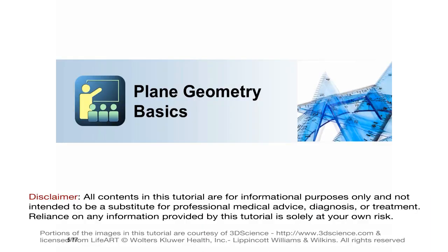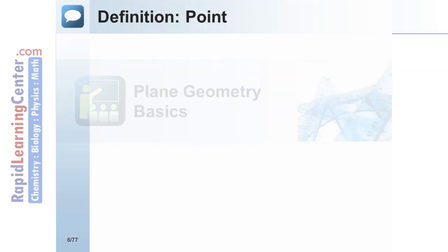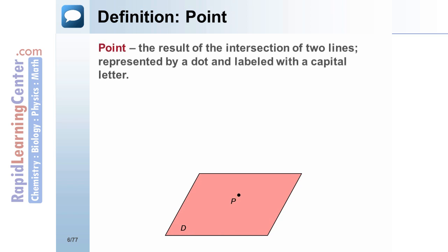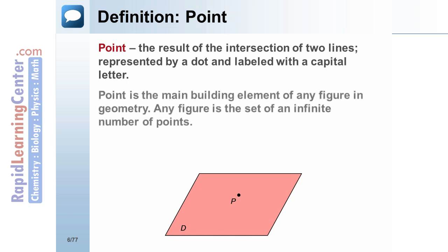The first section will discuss the basics of plane geometry. Definition: Point. A point is the result of the intersection of two lines. A point is usually represented by a dot and labeled with a capital letter. A point is the main building element of any figure in geometry. Any figure is the set of an infinite number of points.